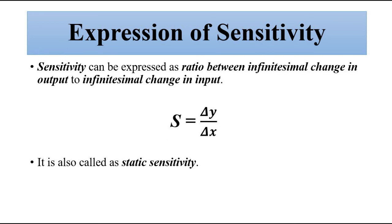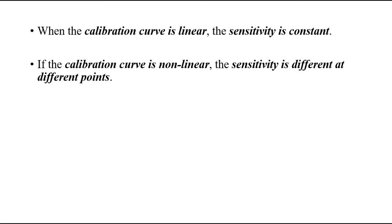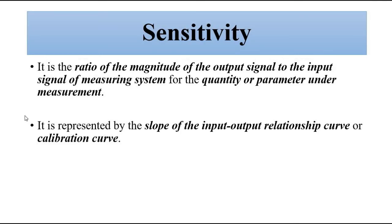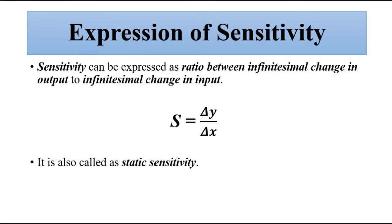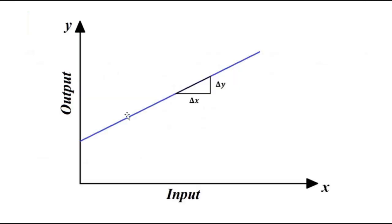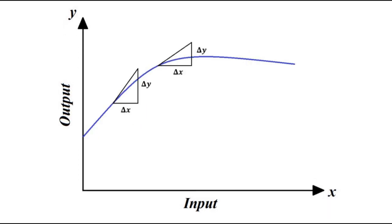So in simple words, sensitivity is the ratio between a small change in output brought about by a small change in input, and it can be calculated by the slope of the input-output relationship curve, or calibration curve, at different points. I hope you liked this video. Please subscribe to the Engineering Tutorial channel for more videos related to engineering, science, and technology. Have a great day, thank you very much.